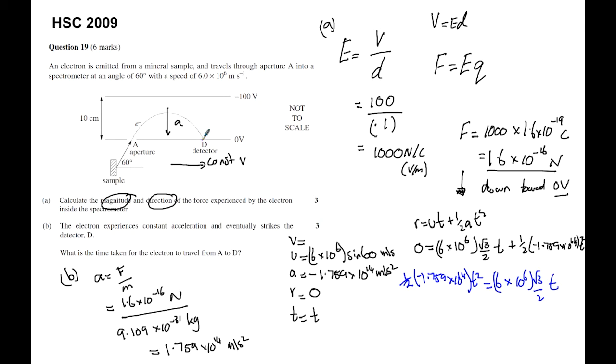But we want the zero displacement at D, so we can actually cancel out one t over there. And so as a result, I get t is equal to 6 by 10 to the power of 6 multiplied by root 3 over 2.